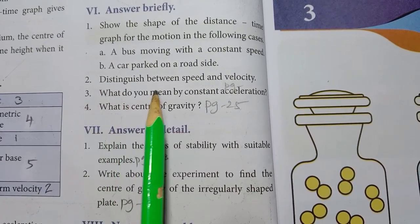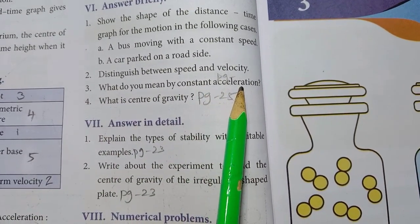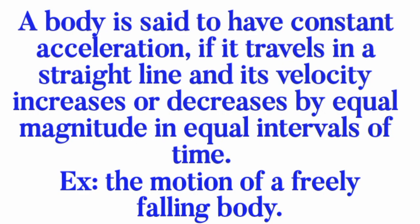3rd one — what do you mean by constant acceleration? Answer: a body is said to have constant acceleration if it travels in a straight line and its velocity increases or decreases by equal magnitude in equal intervals of time. Example: the motion of a freely falling body.